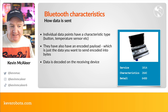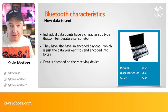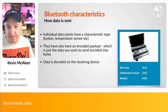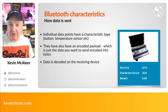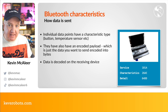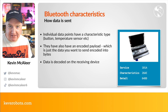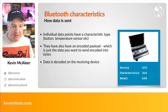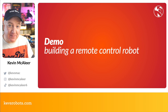Individual data points have a characteristic type such as button, temperature, sensor, etc., and can have an encoded payload — data represented in bytes. For our project, I'm simply going to send single characters like U, D, L, R for up, down, left, right. Since they're simple characters I don't really need to encode and decode them. The data is then decoded on the receiving device.